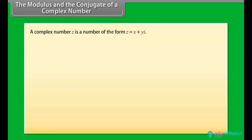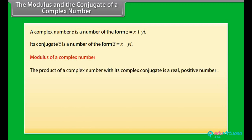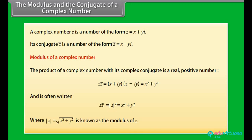The modulus and conjugate of a complex number. A complex number Z has the form Z equals X plus Y iota. Its conjugate, Z-bar, is Z-bar equals X minus Y iota. The product of a complex number with its complex conjugate is a real positive number: Z times Z-bar equals (X plus iota Y)(X minus iota Y) equals X squared plus Y squared, often written as the square of the modulus of Z, where the modulus of Z equals the square root of X squared plus Y squared.